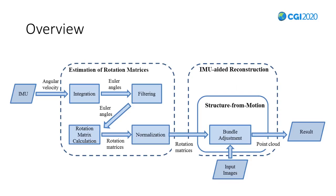The first thing we do is read from IMU sensors, which will offer us the angular velocity in three directions of the coordinates. By integration, we get Euler angles from the angular velocity. And by filtering, we get rid of the noises produced by the sensors. We can now compute the rotation matrix from the Euler angles. Then, we need to rotate the matrix into our camera system by the normalization step. Finally, together with the input images, we do an IMU-aided bundle adjustment, and get the point cloud as our final result.